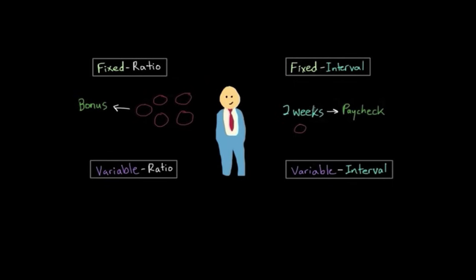So as you might imagine, he probably doesn't have much of an incentive to sell more than one car, if he'll make the same amount of money anyway. And that's the classic rate of responding for fixed interval schedules. It's much slower than the fixed ratio schedule like we discussed earlier.